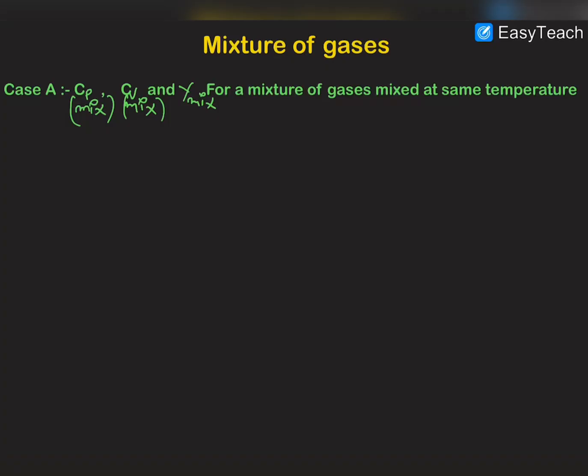Hello guys, welcome on Tesla Adventures. In this video we are going to discuss the details of mixture of gases. First of all we discuss Case A, in which we have to derive the expression for the value of Cp mixture, Cv mixture, and gamma mixture for a mixture of gases which are mixed at the same temperature. So let us derive this expression for two gases.